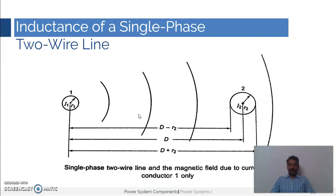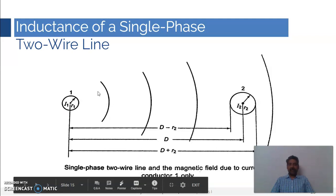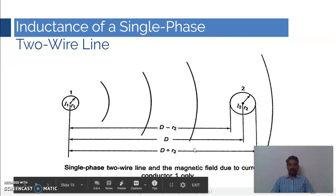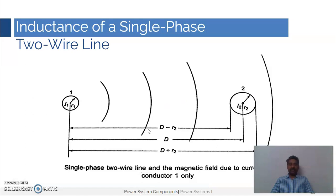For the time being we will consider the flux linkages produced by conductor one only, because of the current i1 passing through the conductor. Then we will separately consider the flux linkages because of current i2. When considering flux linkages due to i1, we need to discuss different distances: from the origin of conductor one to the outer surface of conductor two facing conductor one is d minus r2, the distance between the centers of the two conductors is d, and from the center of conductor one to the other surface of conductor two is d plus r2. Accordingly the flux linkages will also change.